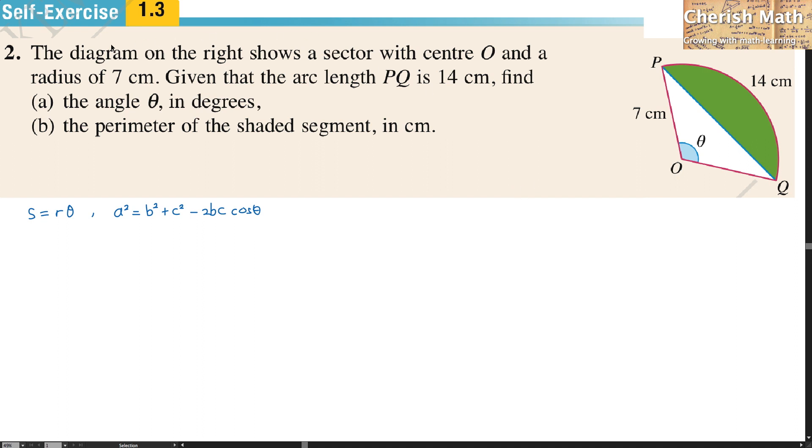Question number 2. The diagram on the right shows a sector with center O and a radius of 7 cm. Given that the arc length PQ is 14 cm, find part A, the angle theta in degrees, part B, the perimeter of the shaded segment in cm.